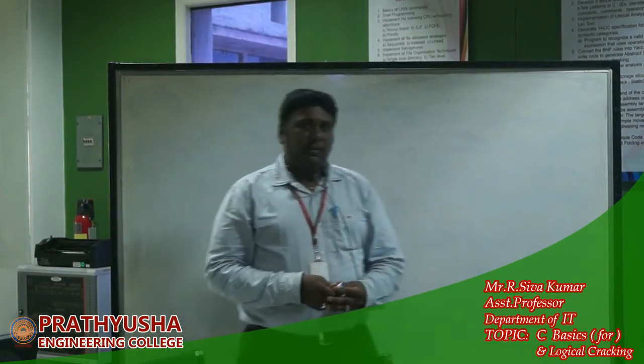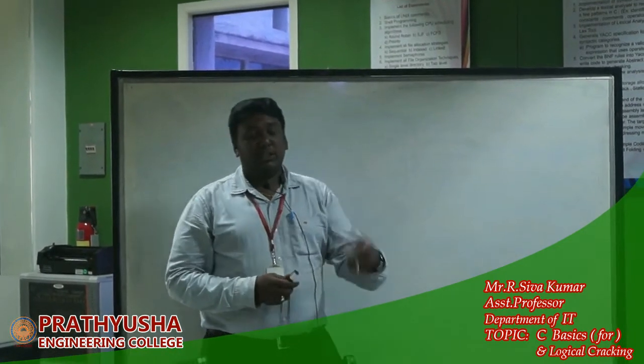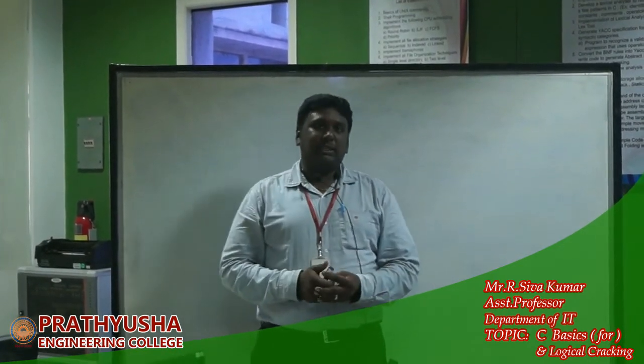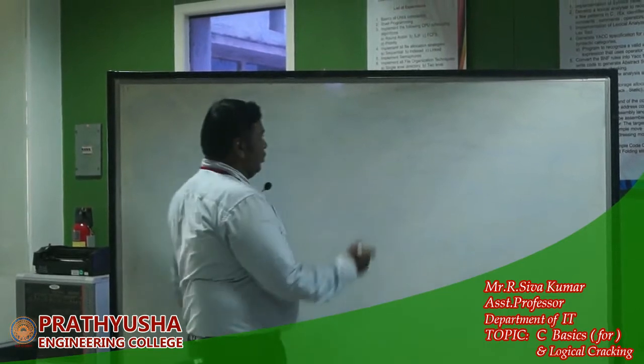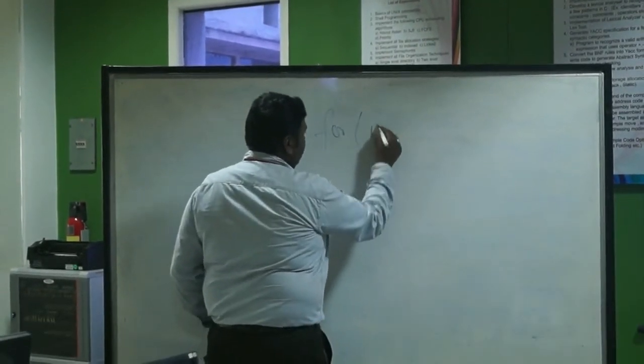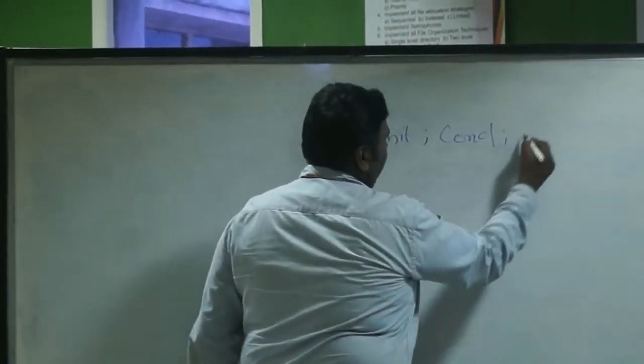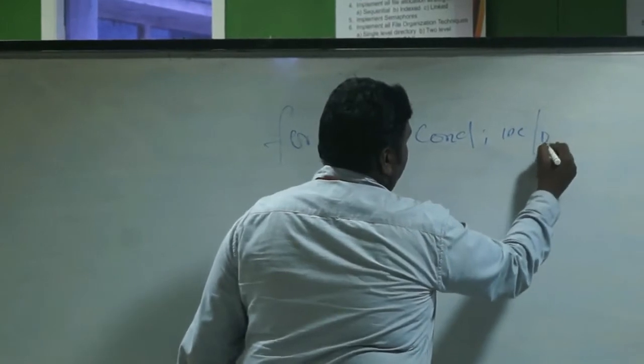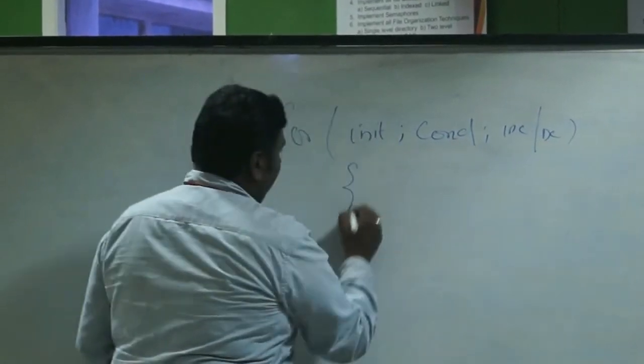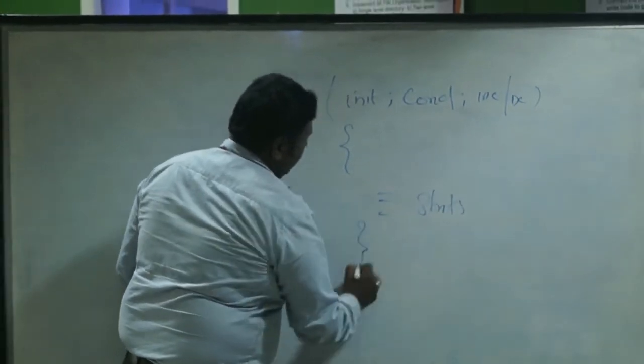A for loop is an implementation statement where a set of statements has to be executed repeatedly. Let us see the syntax for the for loop. The syntax starts with for, then we will have the initialization, then we will have the condition, then we will have the incrementation or decrementation part, then we will have the set of statements, then the statement ends.